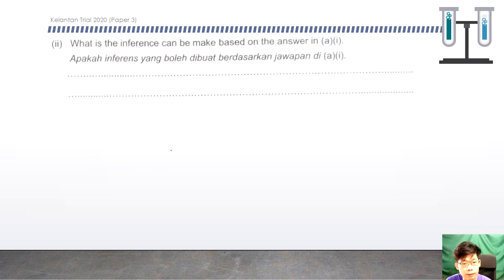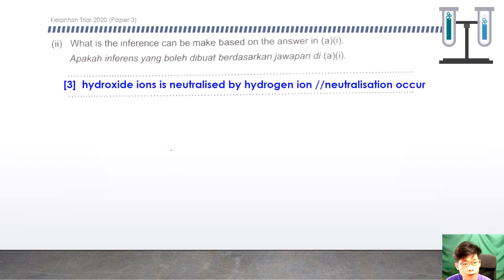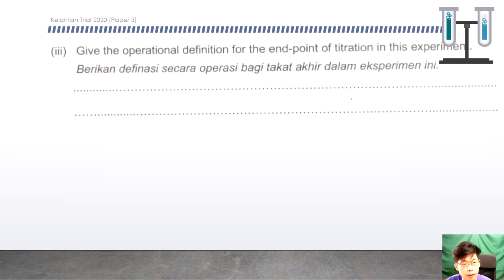What inference can be made? You can write that hydroxide ions are neutralised by hydrogen ions, or you can write neutralisation. For the operational definition for the end point of this experiment, remember you need to include two things: what you do and what you observe.